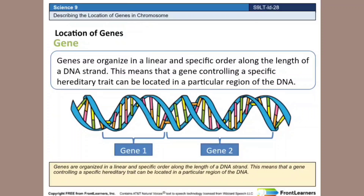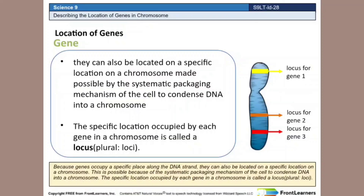Genes are organized in a linear and specific order along the length of the DNA strand. This means that a gene controlling a specific hereditary trait can be located in a particular region of the DNA. Because genes occupy a specific place along the DNA strand, they can also be located on a specific location on the chromosome. This is possible because of the systematic packaging mechanism of the cell to condense DNA into a chromosome.